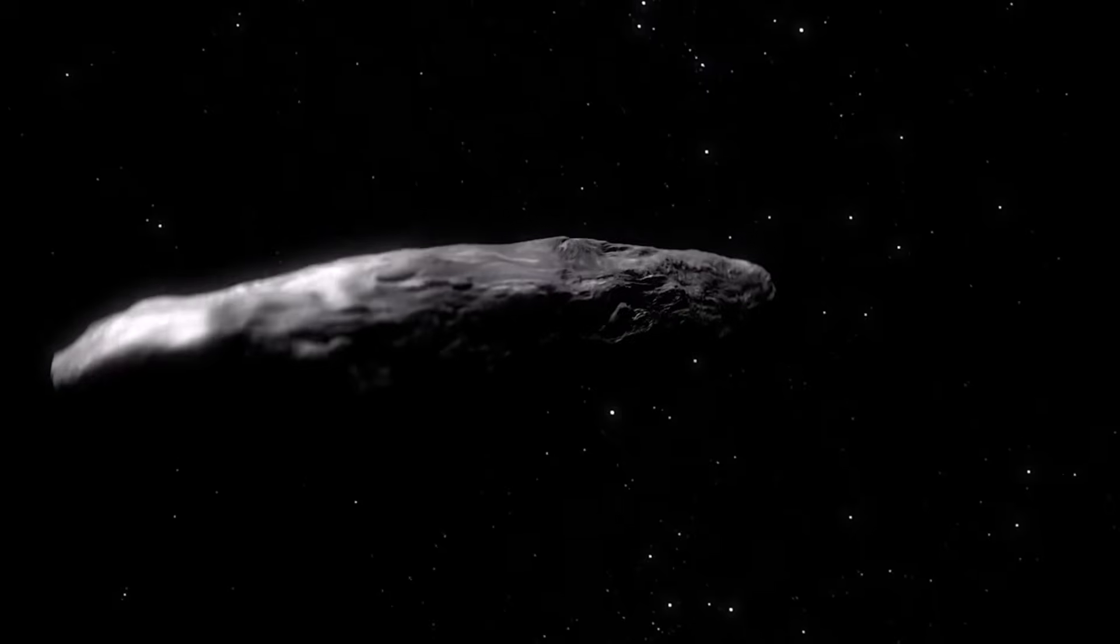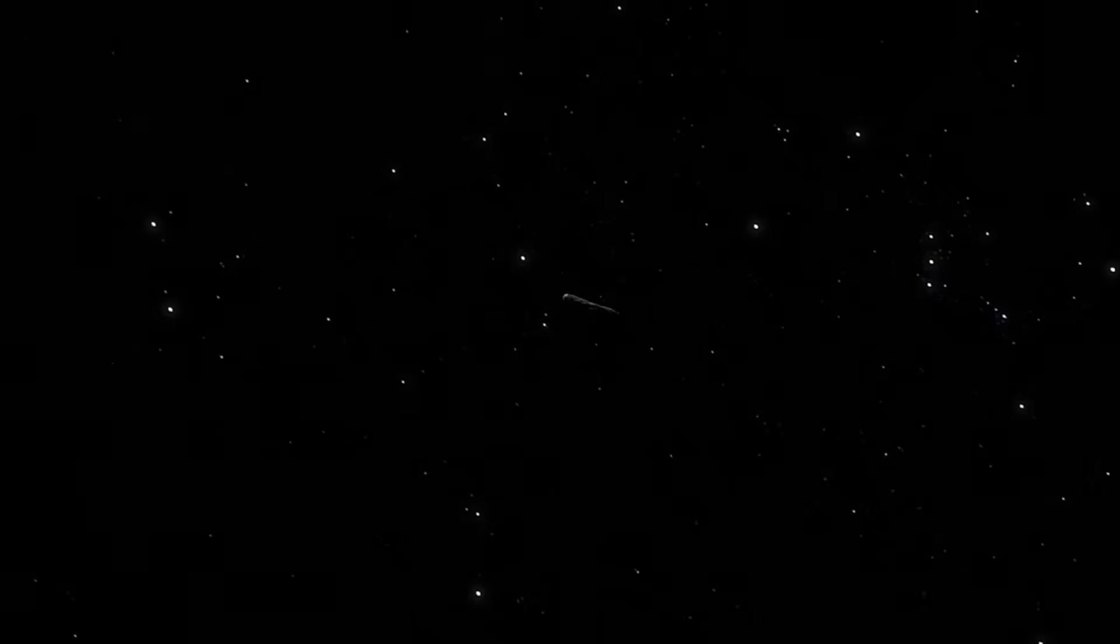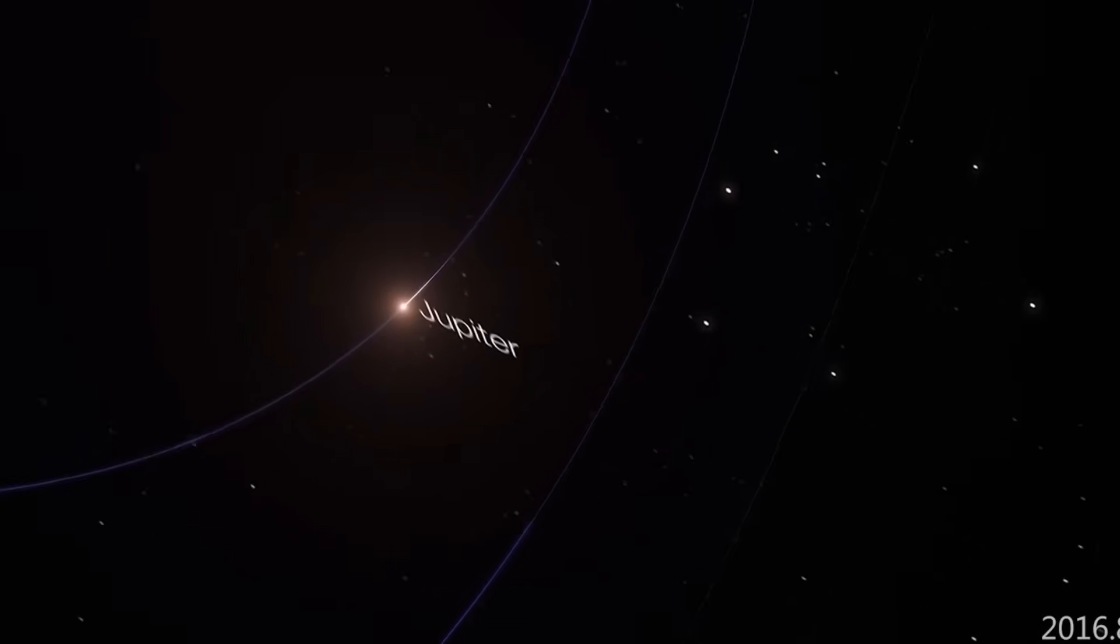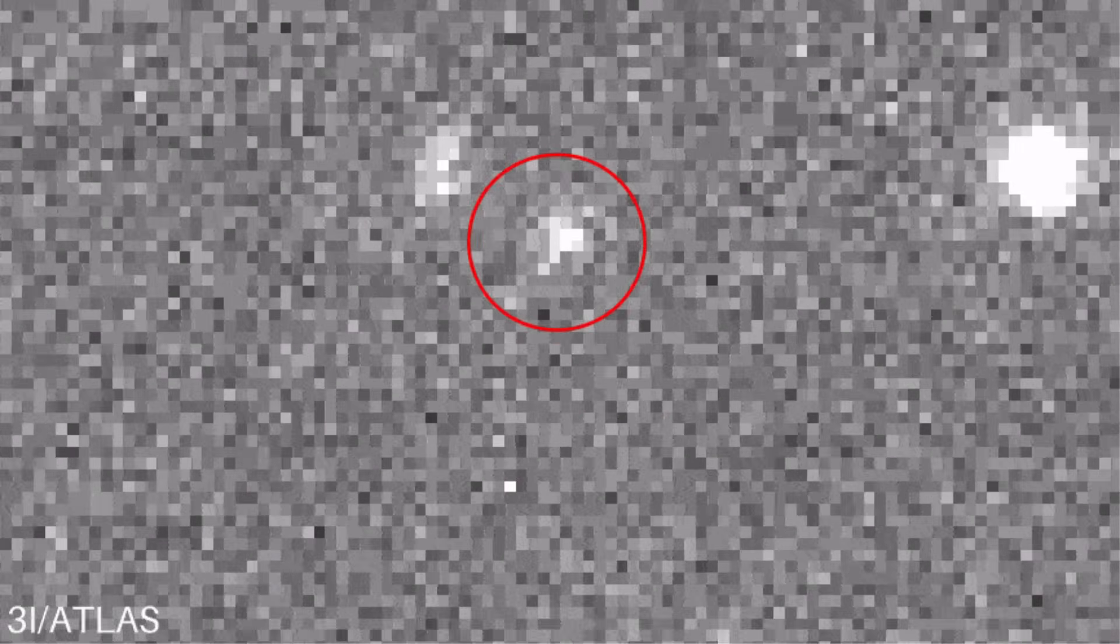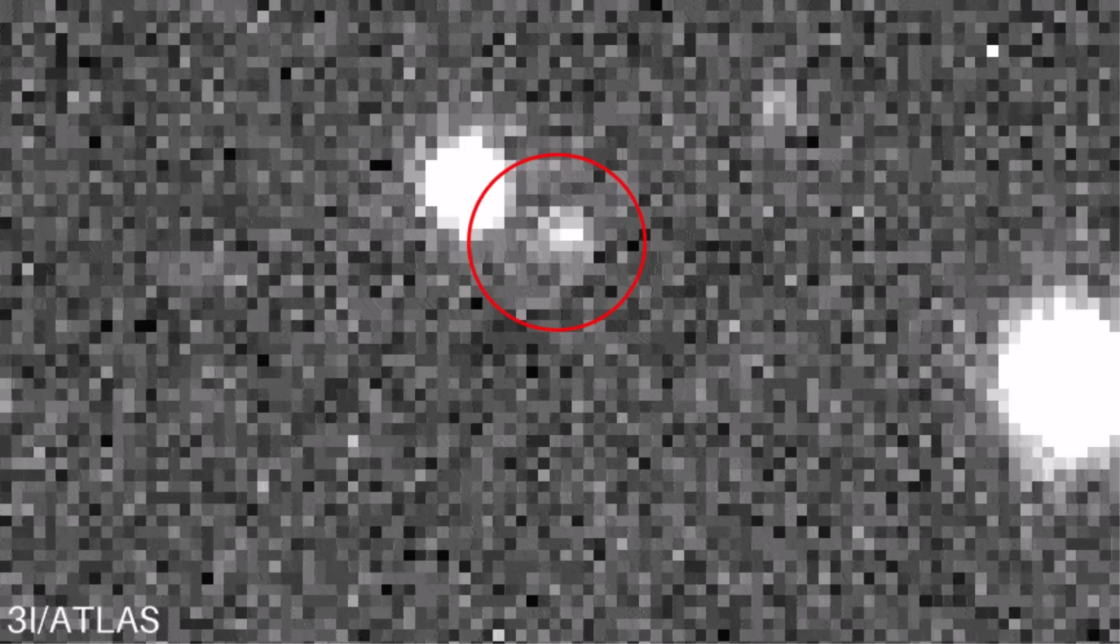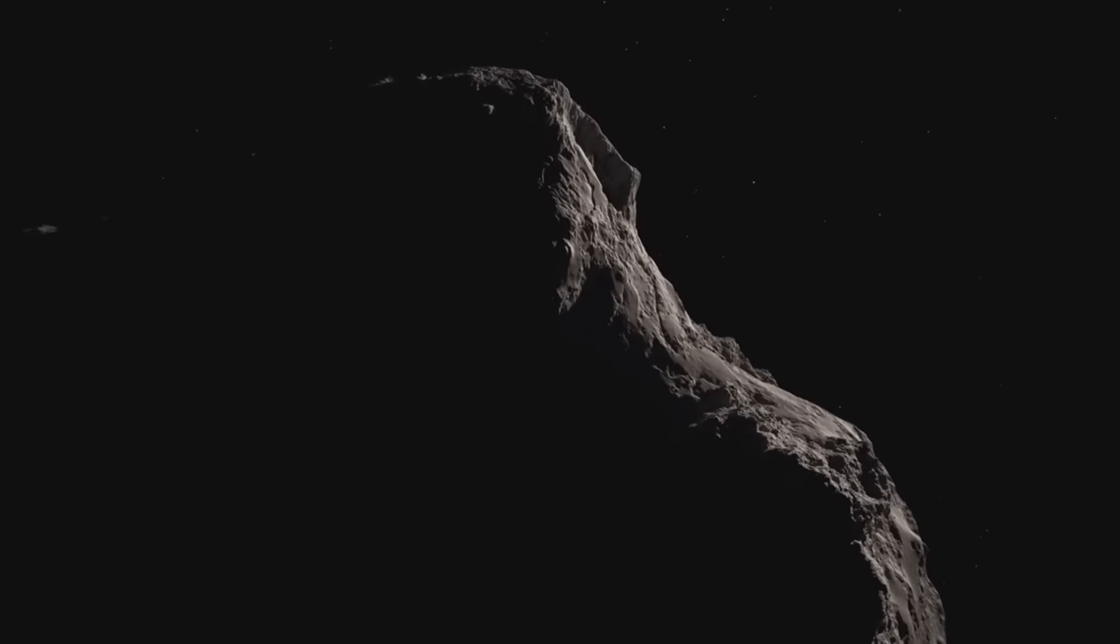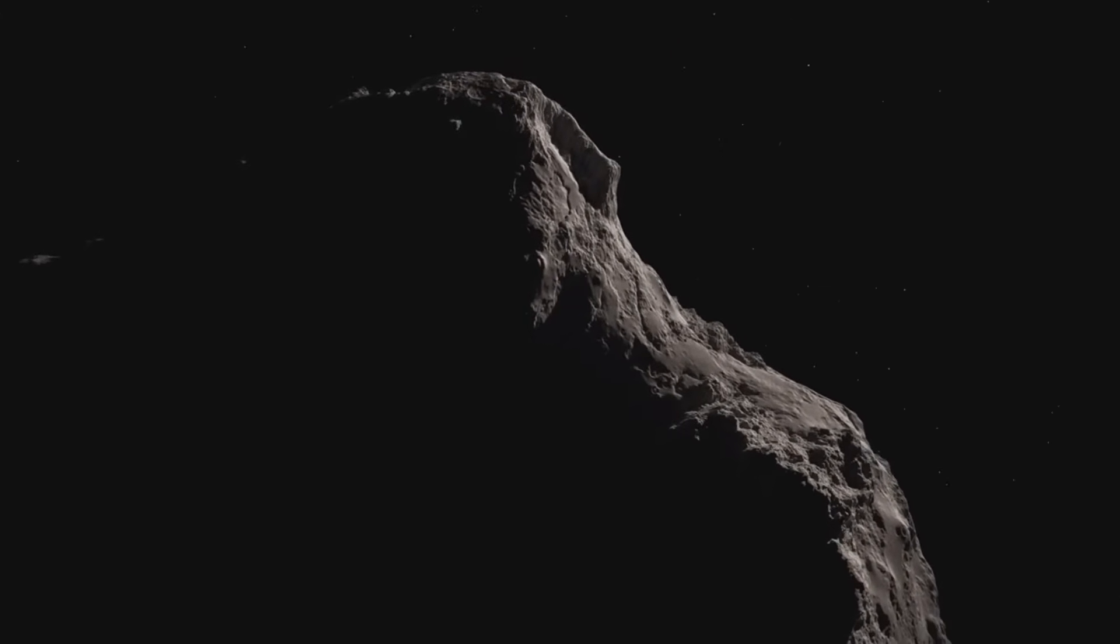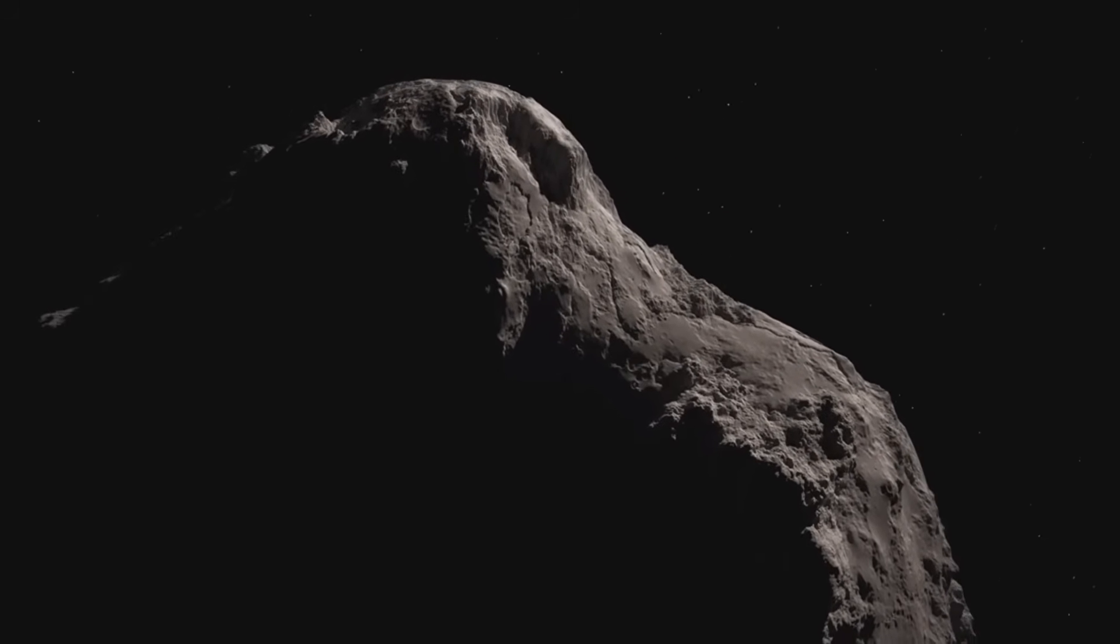The final answer may already be here, locked away in those 40 gigabytes of JWST data. When that embargo lifts, we may finally know the truth about the surface of 3I Atlas. Until then, we watch and we wait. The clock continues to tick down to October 29, 2025. The day it makes its tightest turn. The day it hides from our view. A day that could shape the future of our species.